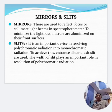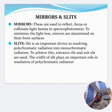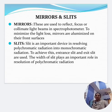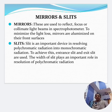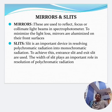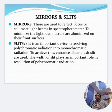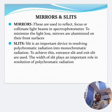Mirrors are used to reflect, focus, or collimate light beams in spectrophotometers. To minimize light loss, mirrors are aluminized on their front surfaces. Slits are an important device in resolving polychromatic radiation into monochromatic radiation. Entrance and exit slits are used, and the width of the slit plays a very important role in the resolution of polychromatic radiation.